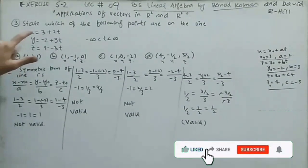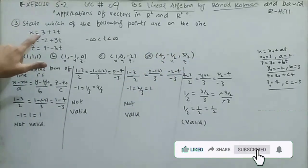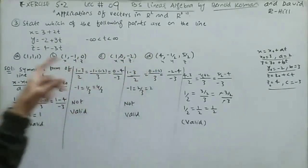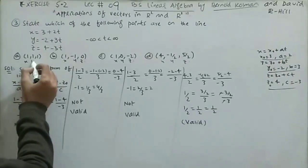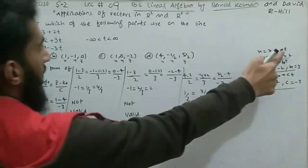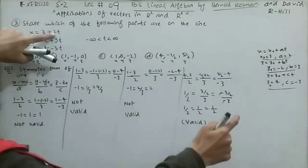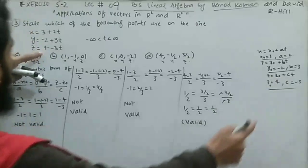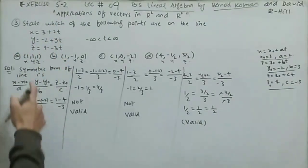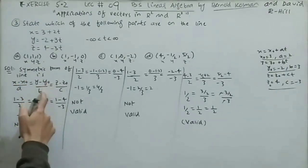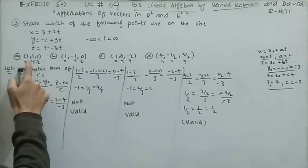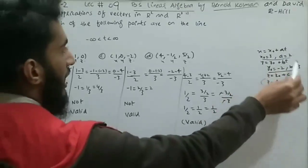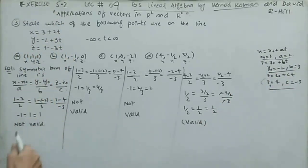Question 3: state which of the following points lie on the line x y z = (3 + 2t, −2 + 3t, 4 − 3t), where −∞ < t < ∞. Comparing with the parametric form x = x₀ + at, we get x₀ = 3, a = 2; y₀ = −2, b = 3; z₀ = 4, c = −3. The symmetric form is (x − x₀)/a = (y − y₀)/b = (z − z₀)/c. Substituting part (a) gives −1 = 1 = 1, which is not valid.